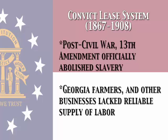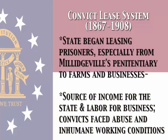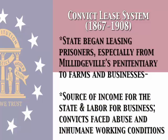We're first going to start with what's known as the convict lease system in Georgia. With the advent of the 13th Amendment, post-Civil War, the federal government enacted the 13th Amendment which officially abolished slavery. What that meant for the state of Georgia, which was largely agrarian, was that farmers were seeking a solid source of labor and were having a hard time filling that labor need. So they looked to the state penitentiary, specifically Milledgeville, and what occurred was that farmers and private industries would pay the state to lease the prisoners for labor.